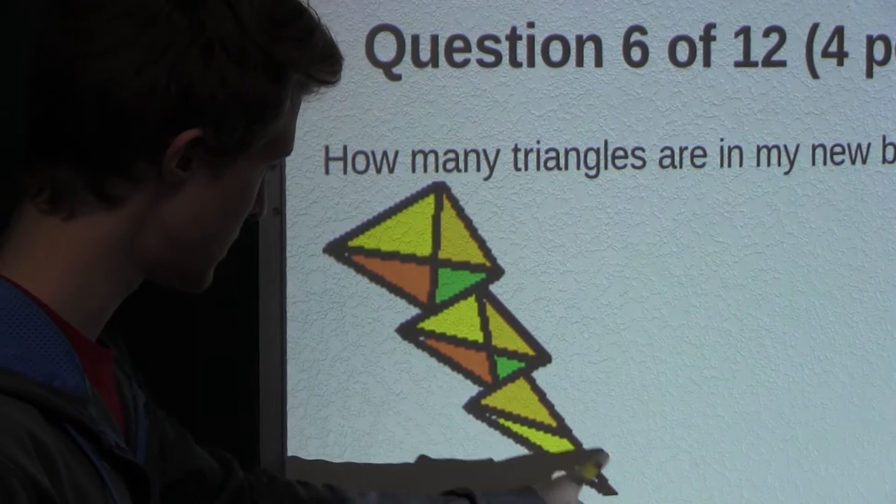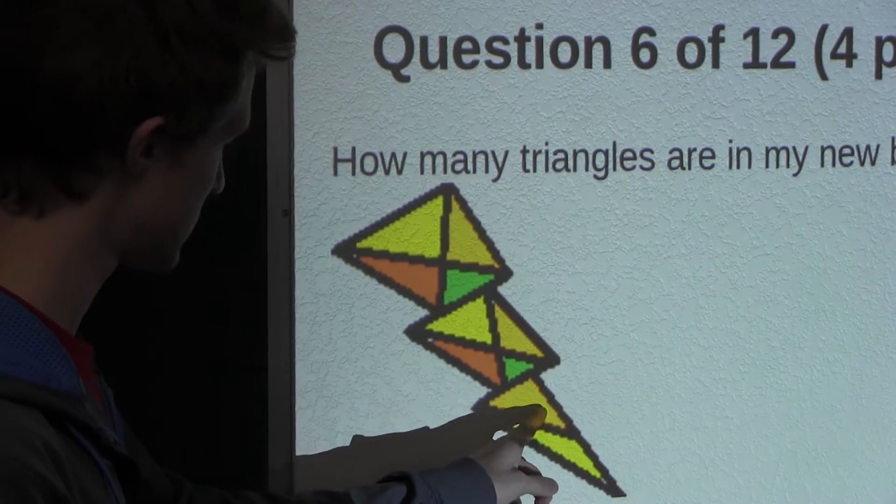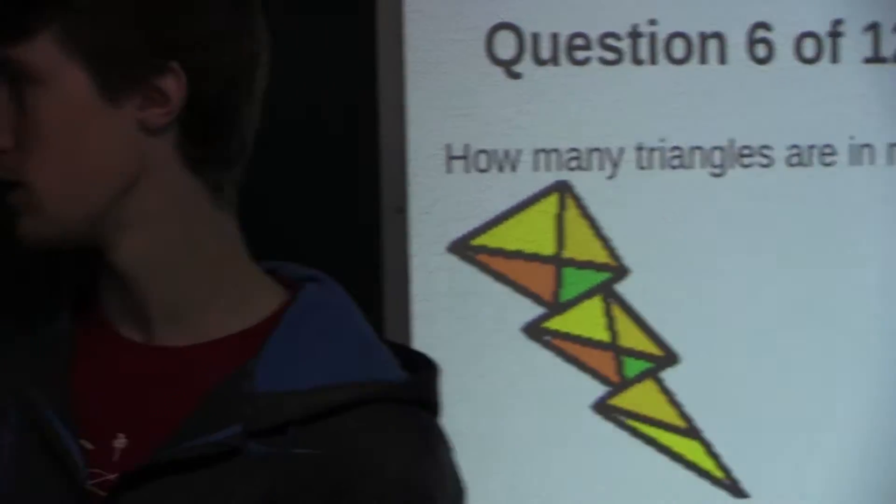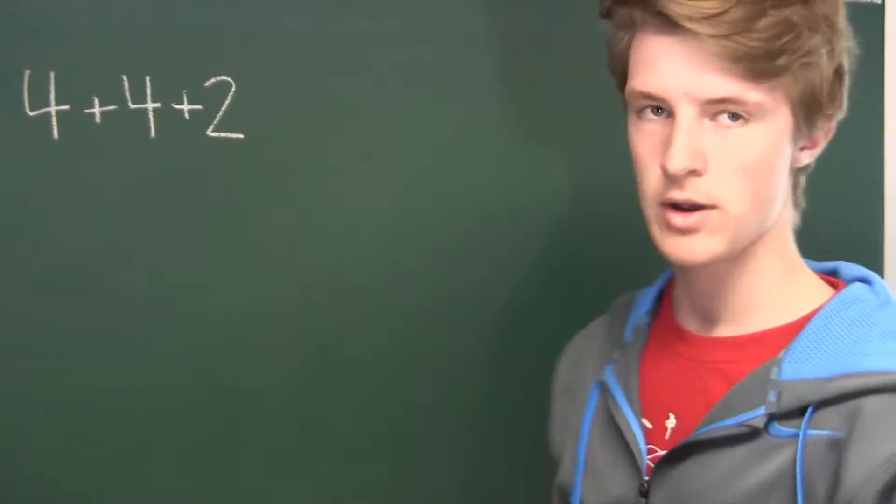And in this large triangle in the bottom, well there's 2 smaller triangles that are made up with only one color, so we have plus 2.